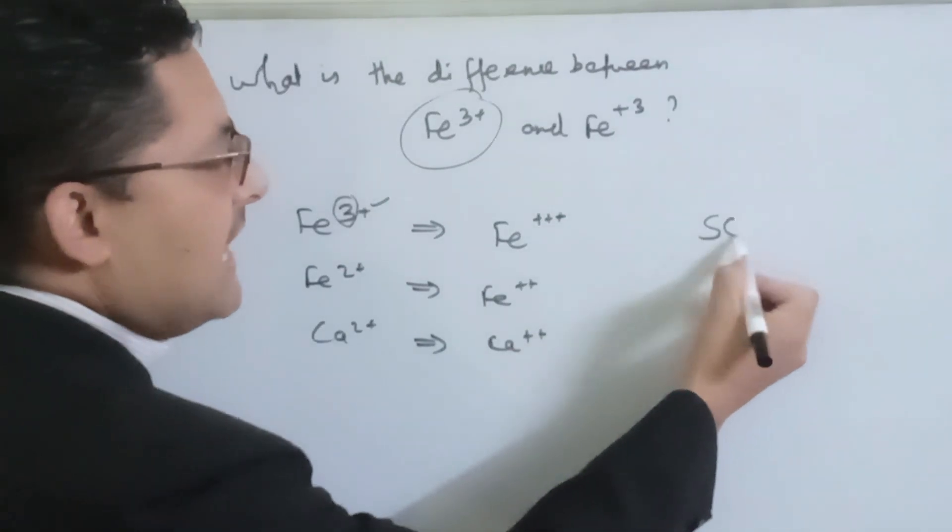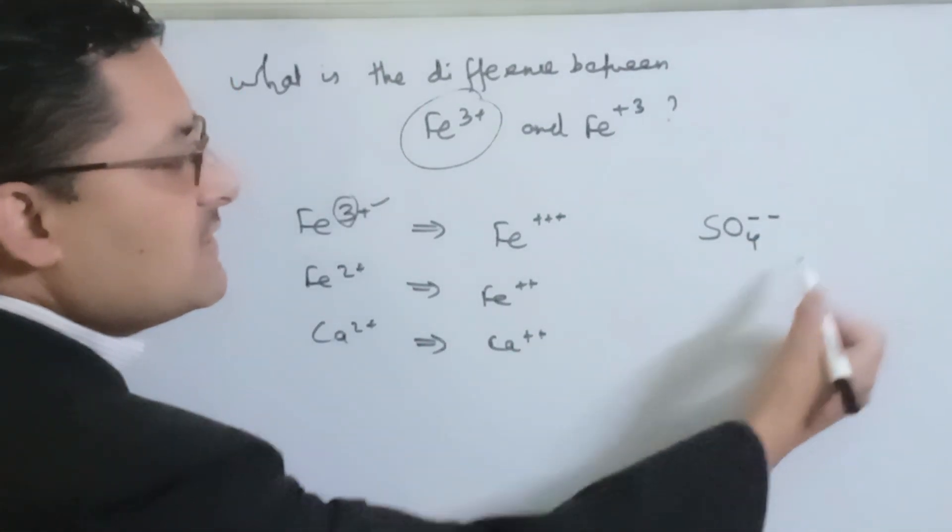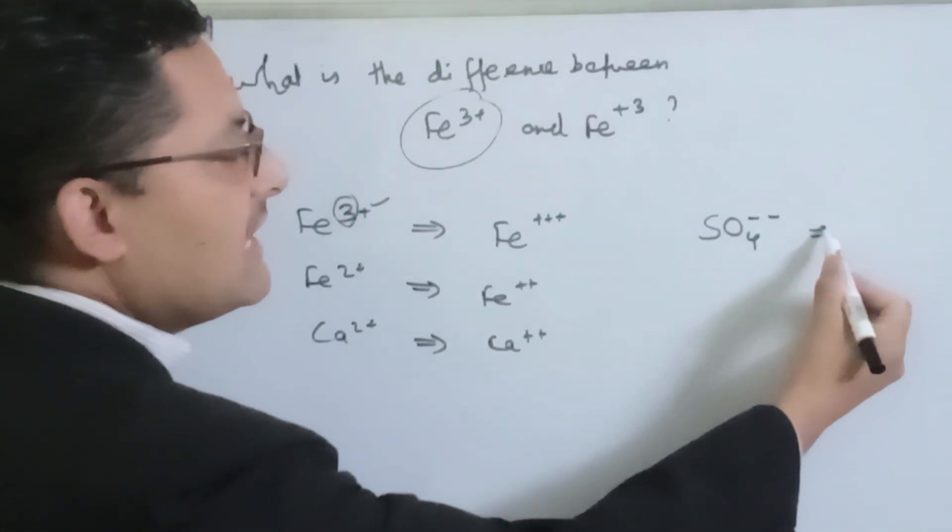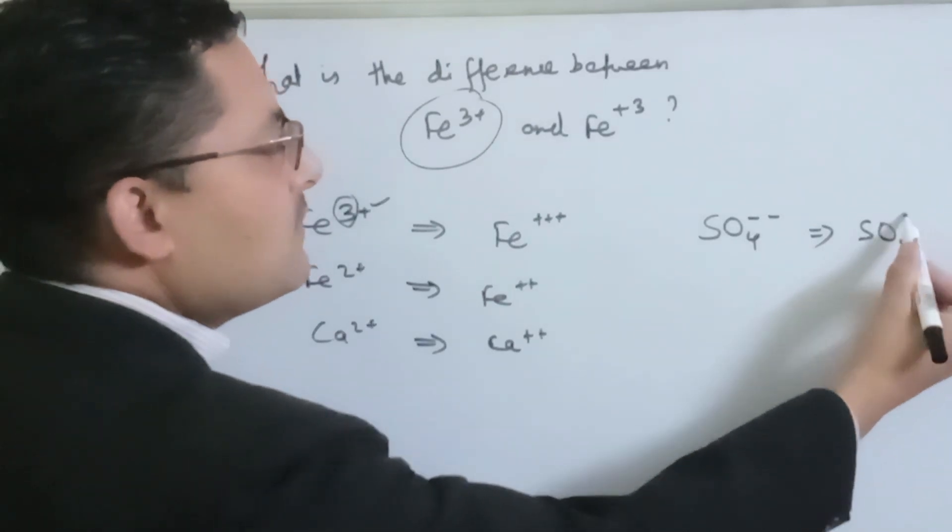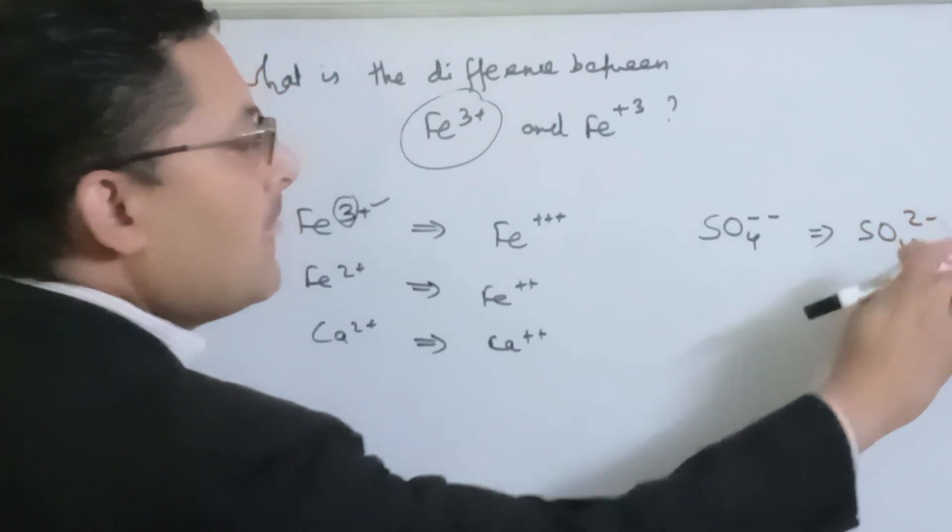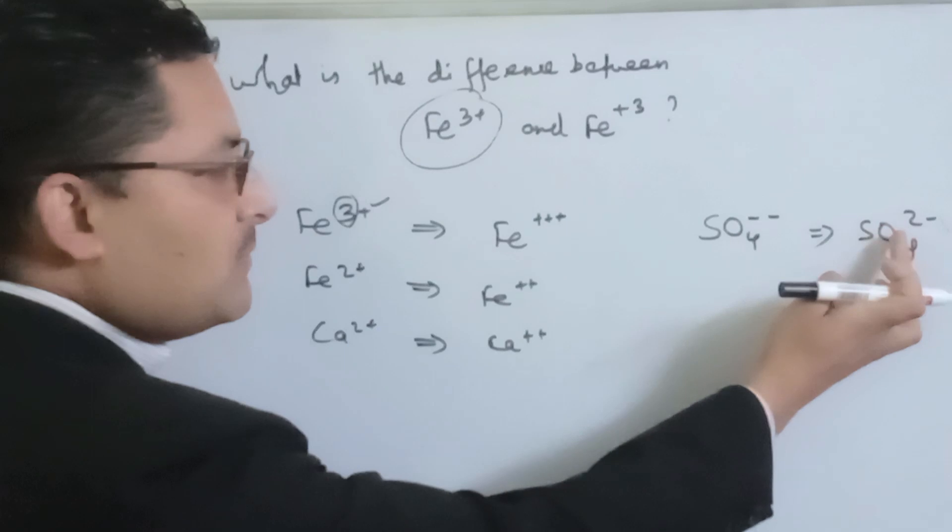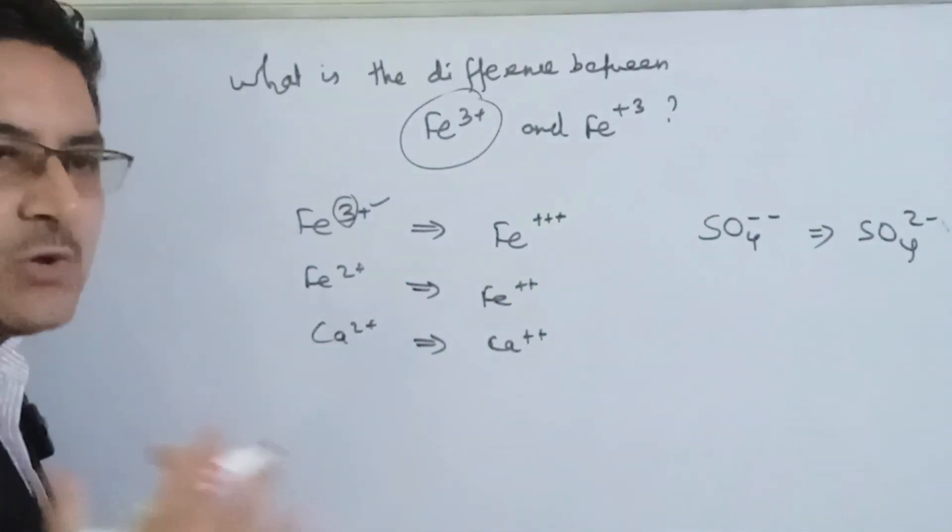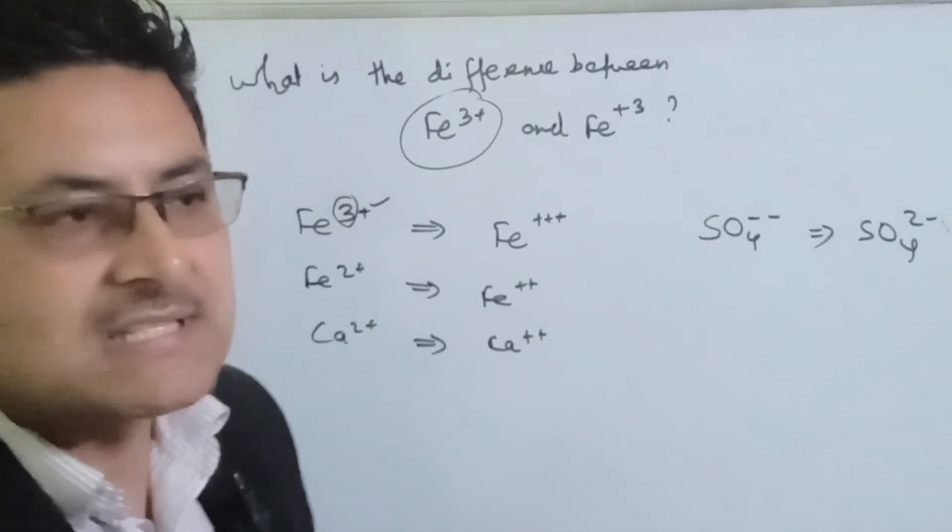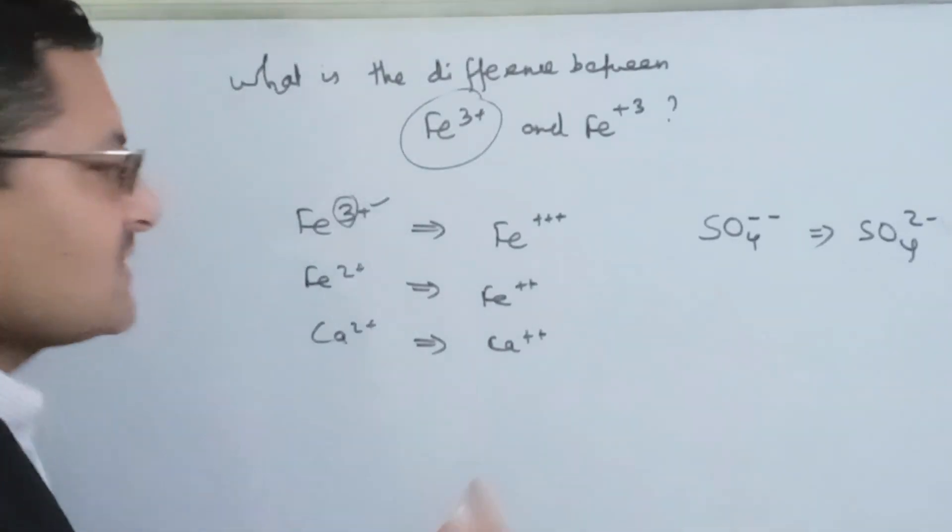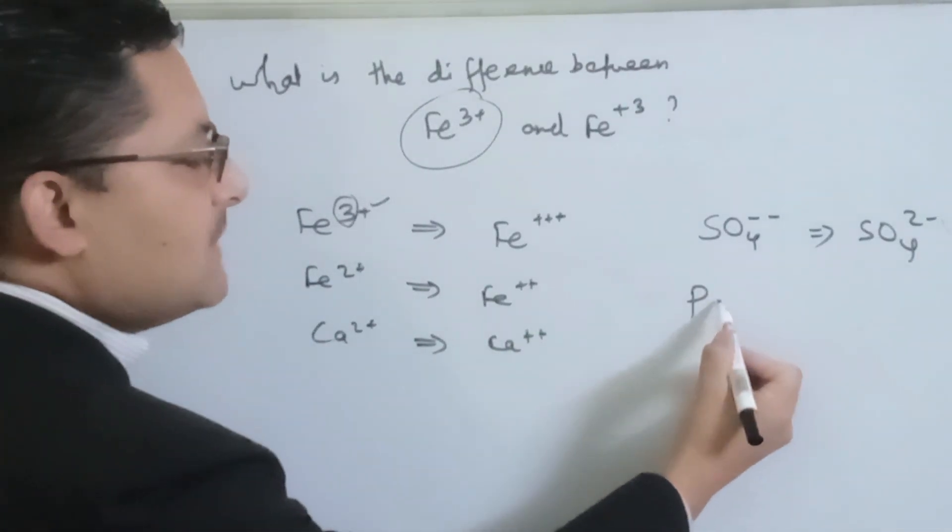For example, with sulfate SO₄²⁻, we can write the number and indicate the charge on the sulfate ion.